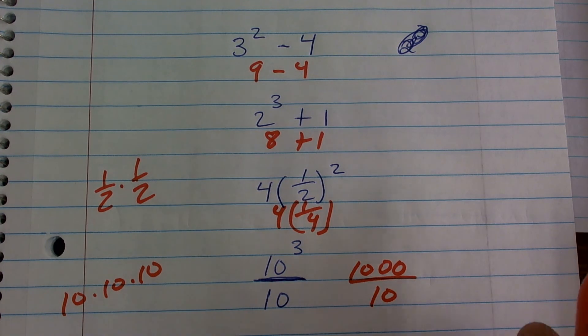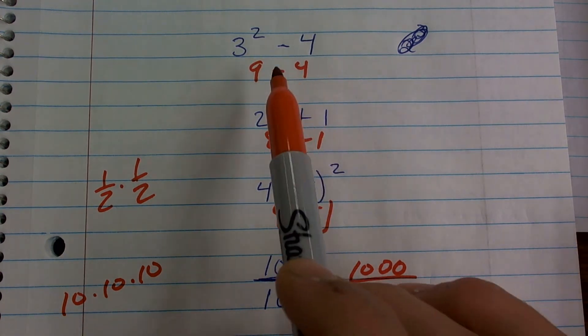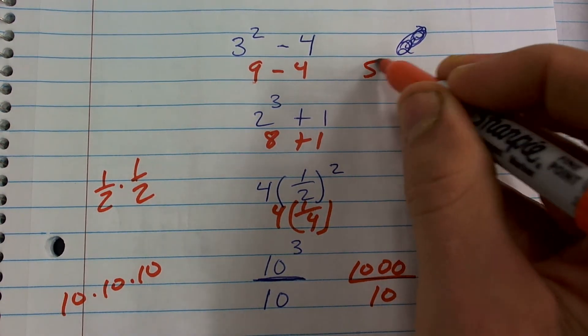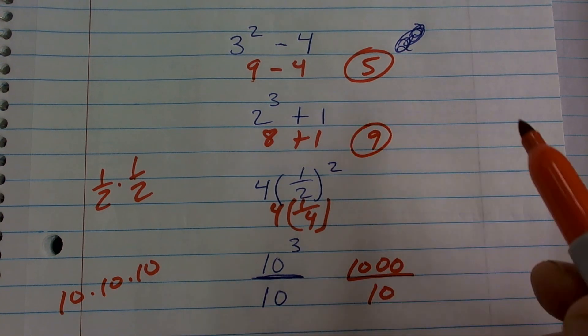Okay, so now let's just simplify because now we only have one more operation left. So these are pretty simple. 9 minus 4 is going to equal 5. 8 plus 1 is 9.